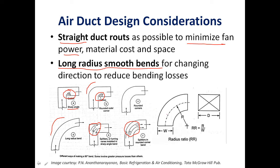The important design parameter for bends is the radius ratio, defined as the ratio of the radius of the bend to the width of the bend. A radius ratio of 1.5 is considered good for minimum bending losses.